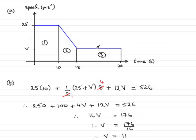So the car was then maintaining a speed through here of 11 meters per second. Anyway, that brings us to the end of part B now.